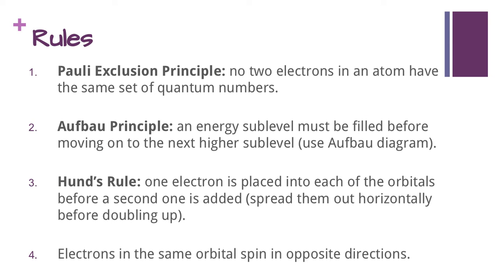We have some other rules for filling these orbitals with specific names based on the scientists associated with them. First, the Pauli exclusion principle says that no two electrons in an atom have the same set of quantum numbers. You don't need to worry about this because we are not covering quantum numbers, but just know that this rule exists.